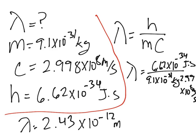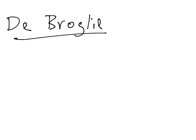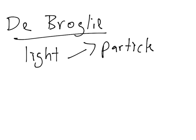So this is our answer. Now one last thing, de Broglie proved that light is a particle and a wave. So light is a particle and a wave, and that's it for Louis de Broglie's equations.